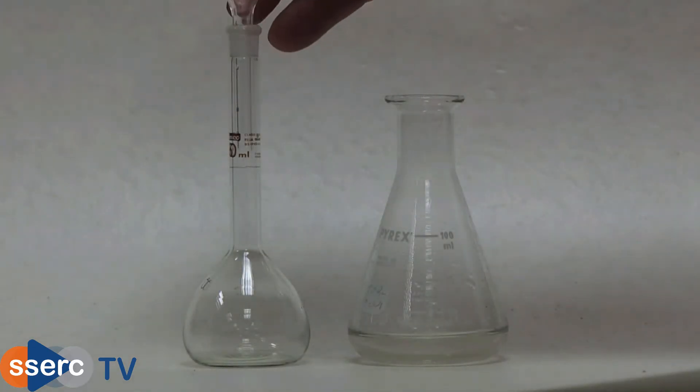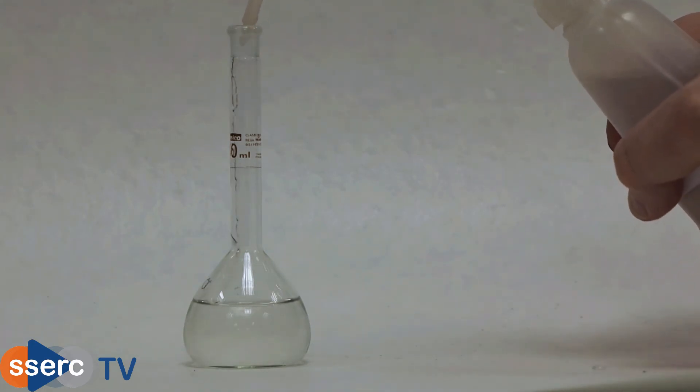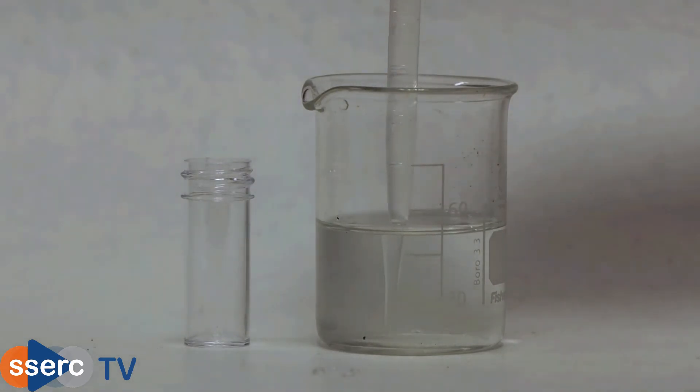Transfer your solution to a volumetric flask and make up to the mark. Once done, place a five cubic centimeter sample of your tea extract in a test tube or any other container ready for the test.